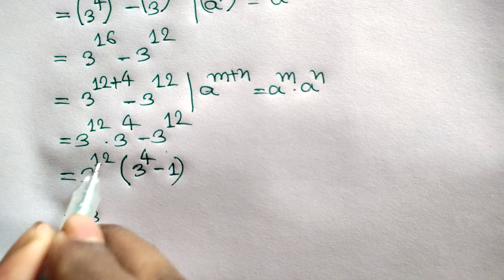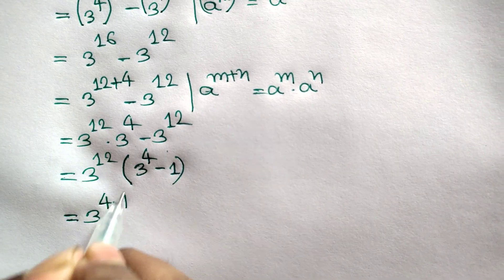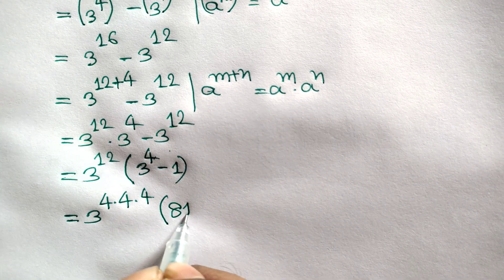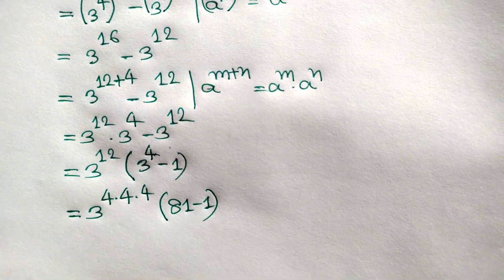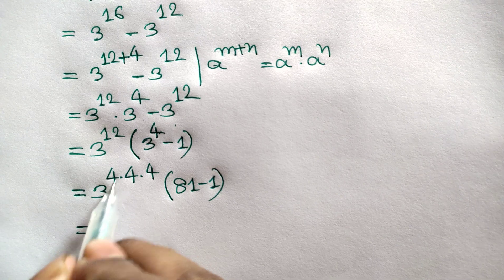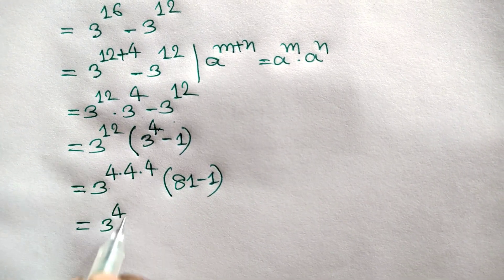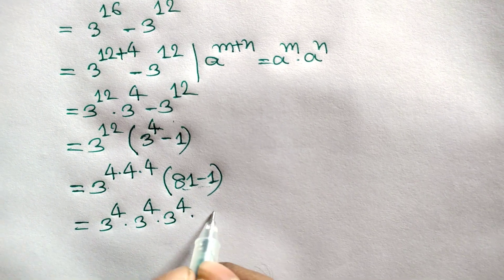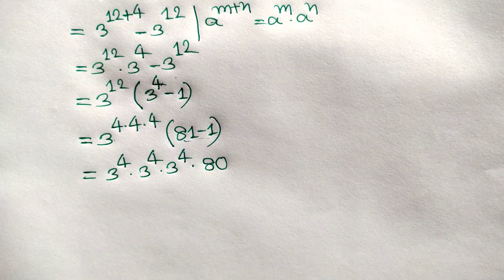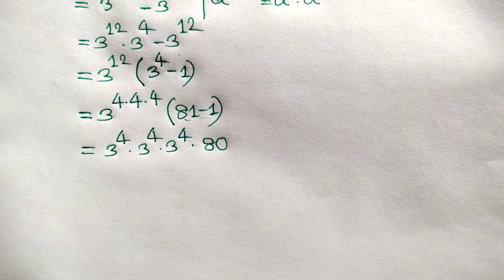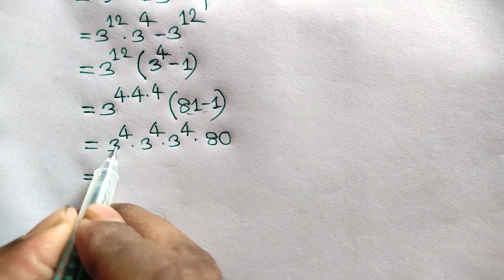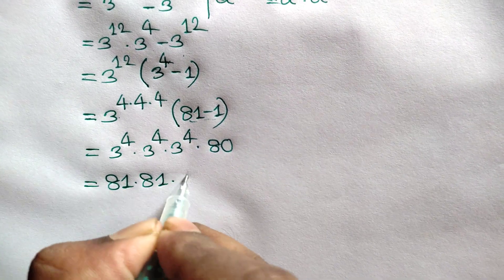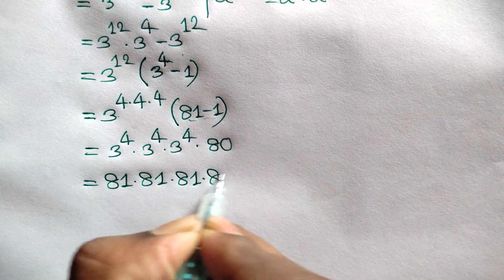This equals 3 to the power 12, which can be written as 3 to the power 4 times 3 to the power 4 times 3 to the power 4. And 3 to the power 4 is 81, so 81 minus 1 is 80. The expression becomes 3 to the power 4 times 3 to the power 4 times 3 to the power 4 times 80, which equals 81 times 81 times 81 times 80.